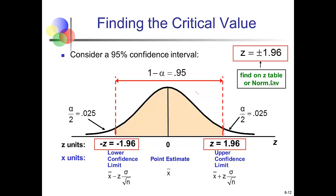To find the Z-critical values, I use norm inverse in Excel. Norm inverse of 0.025, comma 0 for the mean, comma 1 for the standard deviation gives a critical value of negative 1.96. When we fill that into our confidence interval formula, we use the absolute value: 1.96. We need to be 1.96 standard deviations below and 1.96 standard deviations above the sample mean to create our 95% confidence interval.